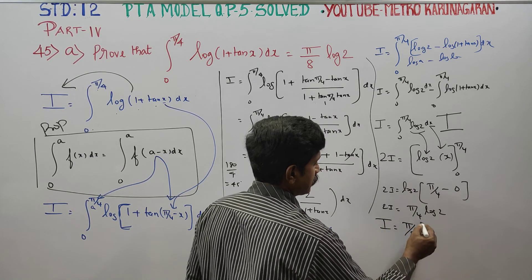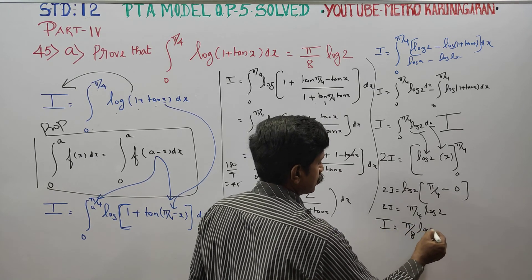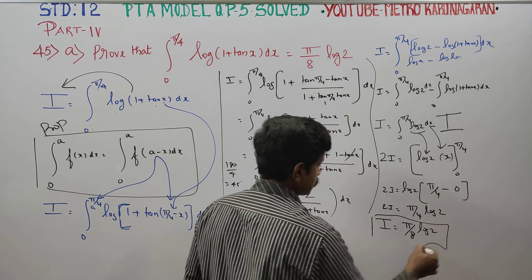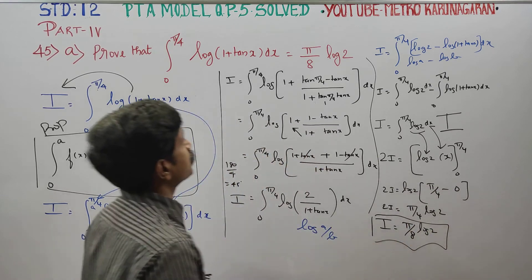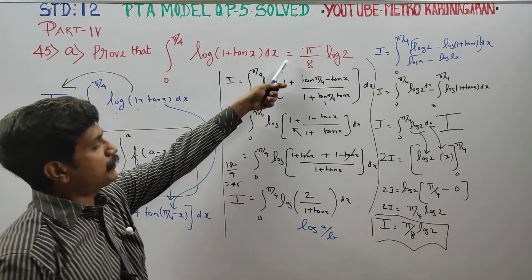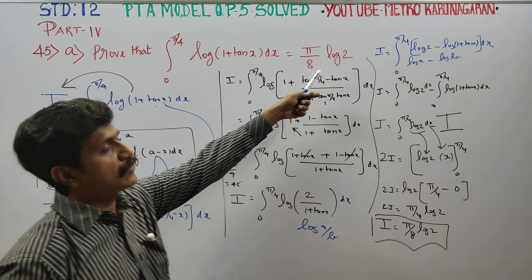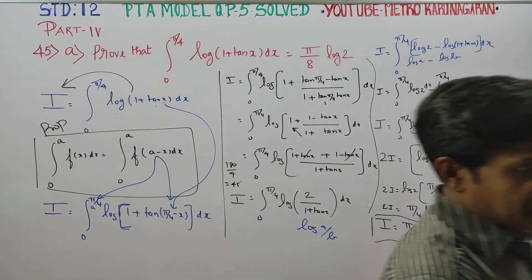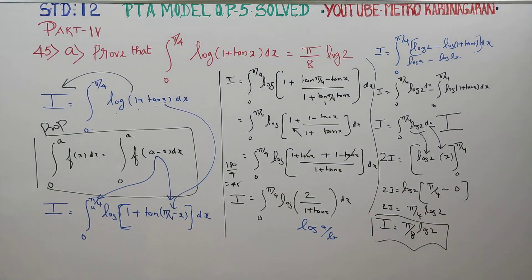Therefore I = π/8 · log 2, which is the final answer. Hence it is proved. Thank you.